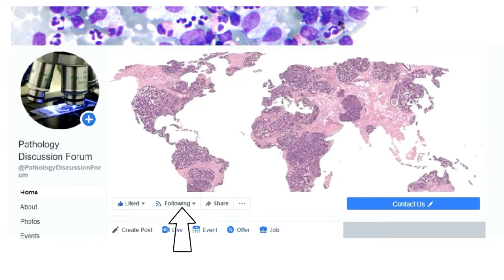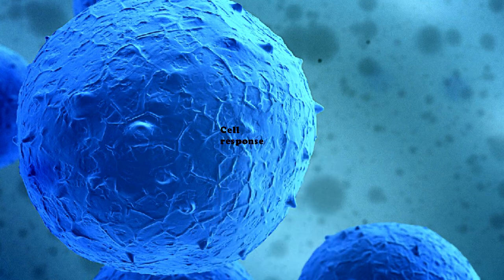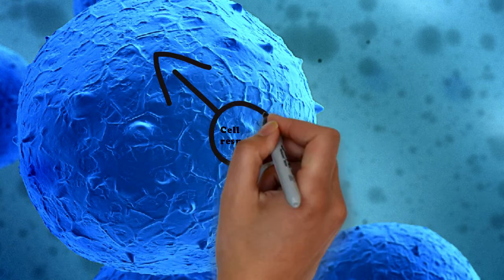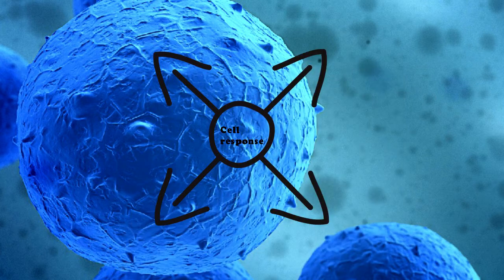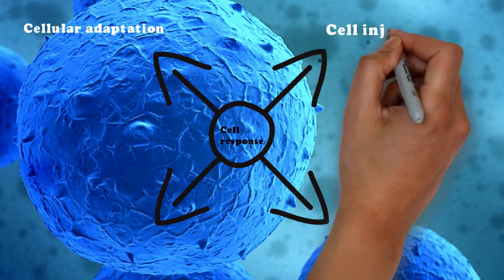Hello viewers, you are watching Pathology Discussion Forum and today's topic is cellular response to stress and noxious stimuli. So let's know what happens to a cell when it loses its ability to maintain homeostasis due to rapid change in the surrounding environment. In case of unbearable or constant environmental stress, a cell responds in a few specific ways: cellular adaptations, cell injury, intracellular accumulation, and cell aging.